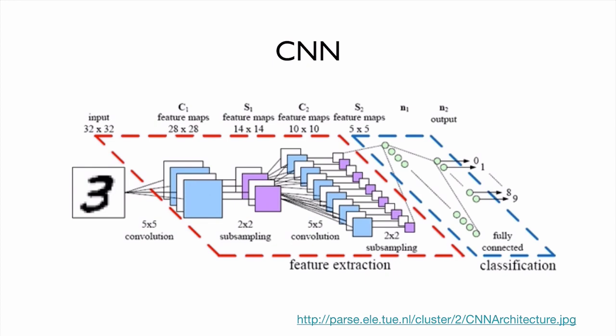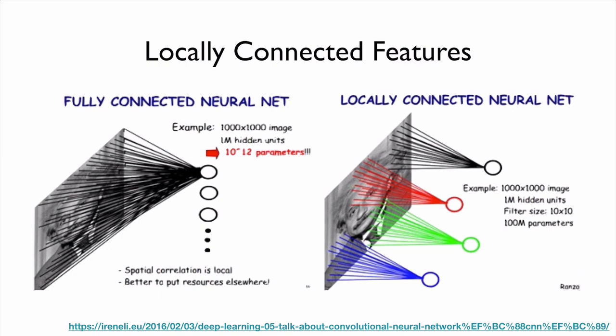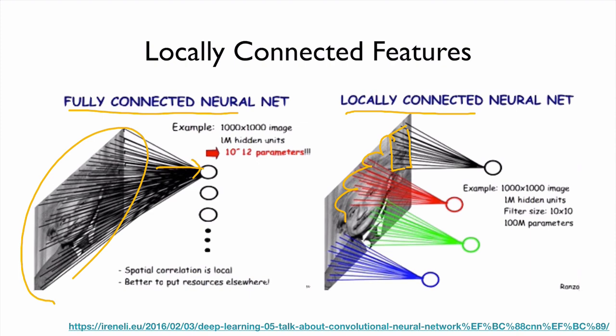Now we understand how CNN works and what subsampling is. What is the main difference between fully connected neural nets and CNN, which is called a locally connected neural net? In a fully connected net, we read all pixel values as input. In CNN, we use small filters and all the weights are shared. By using small filters to look at the entire image, we end up with much smaller weights and it's much more flexible for handling images.